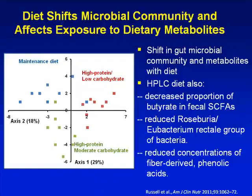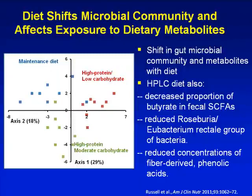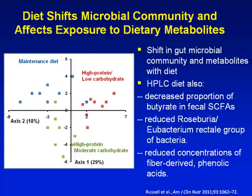At the same time, they also evaluated fecal microbial populations and showed that depending on which diet the individual was consuming, you see clustering of specimens by specific diet. The high-protein/low-carb diet resulted in a major shift in gut microbes, a decrease in the proportion of butyrate relative to other short-chain fatty acids, and a decrease in fiber-derived phenolic acids — likely because the diet was extremely low in carbohydrate with very little plant food. Overall, this shows the interplay between gut microbes and dietary choices.